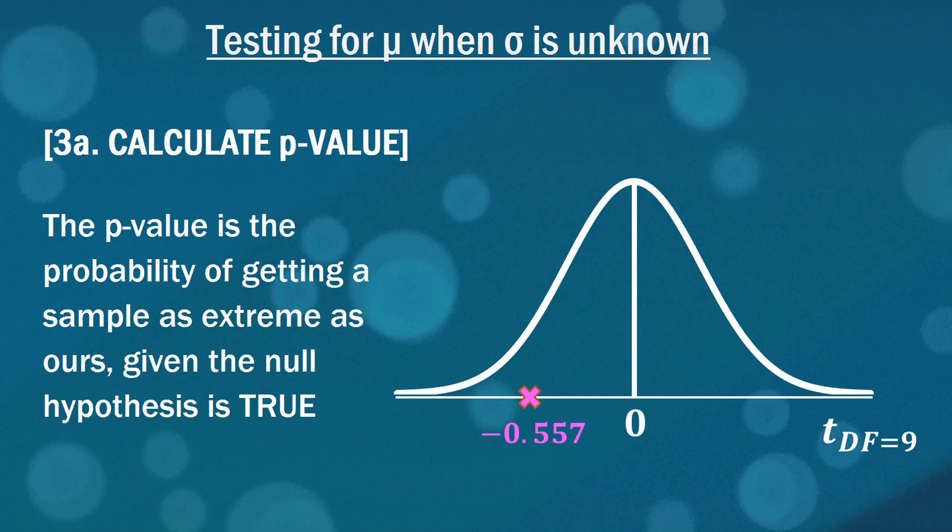Step 3a is something that I just put in here so we understand how to use p-values. You don't necessarily need to do this to complete your hypothesis test but the p-value is the probability of getting a sample as extreme or more extreme than ours given the null hypothesis is true. In other words it's effectively the area in the tail or beyond our test statistic.